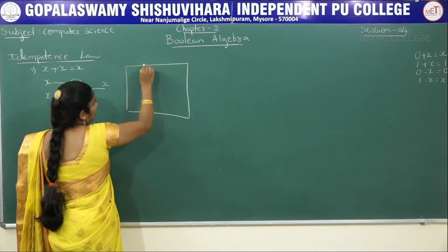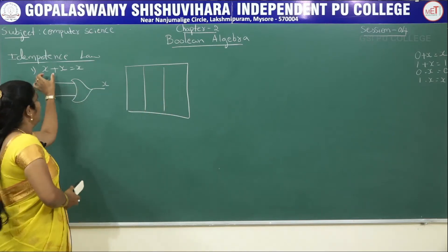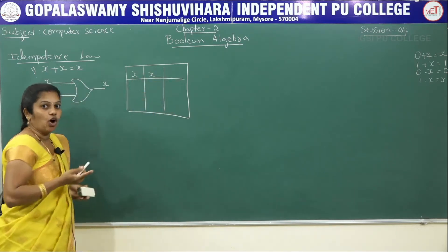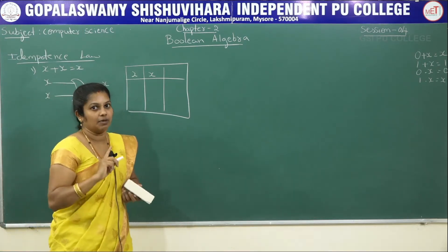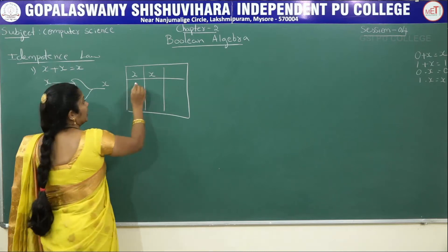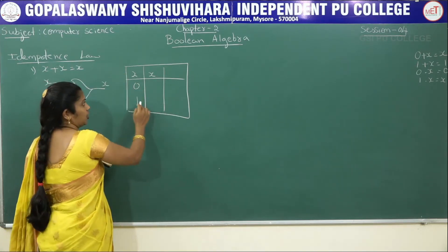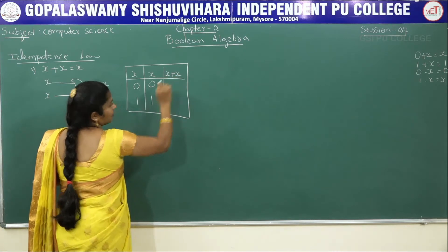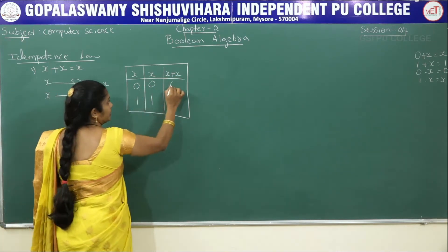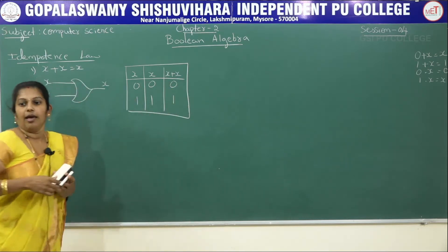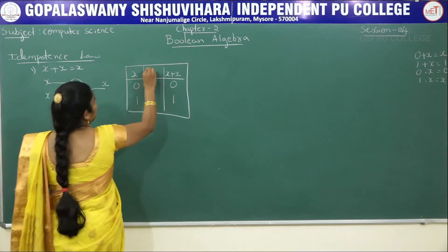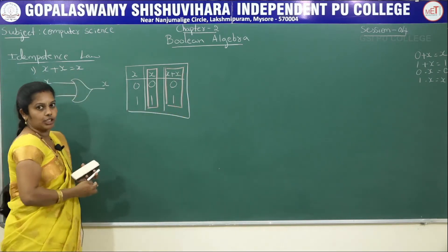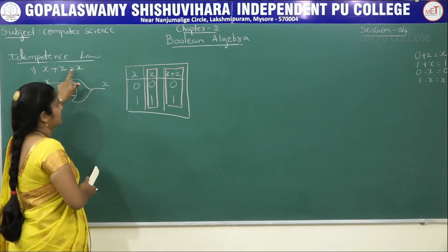For the truth table, we have only one variable, x. With 2 to the power of n equal to 1 variable, we get only two combinations: 0 and 1. For x and the second x, we write 0 and 1. The output x plus x gives 0 plus 0 equals 0, and 1 plus 1 equals 1. This is the same as x, so x plus x equals x is proved.